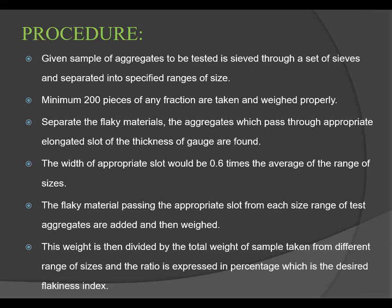The width of the appropriate slot should be 0.6 times the average of the size range. The flaky material passing the appropriate slot from the gauge size range of test aggregate are collected. For example, aggregate passing through the 20 mm size and retained on the 16 mm size — the corresponding slot size is calculated as 0.6 times the mean of that range.